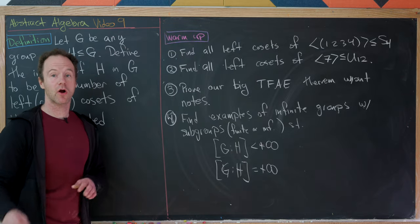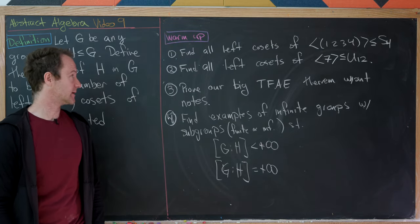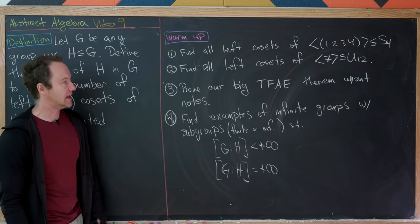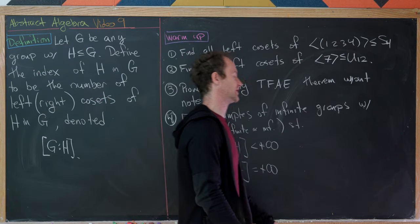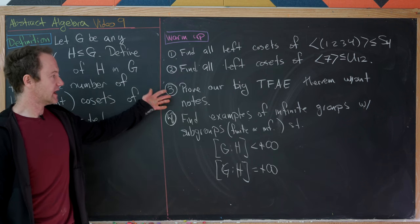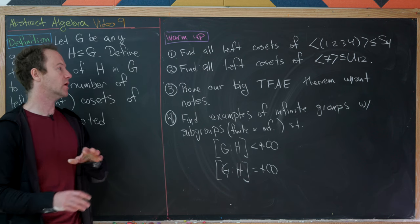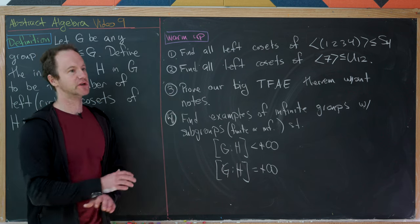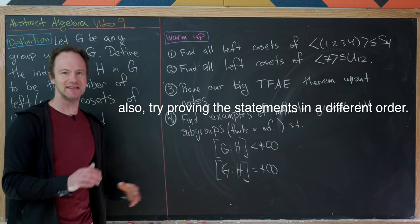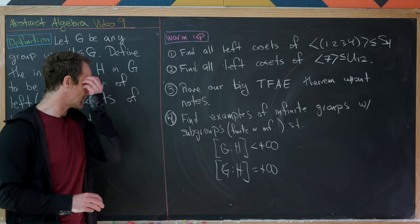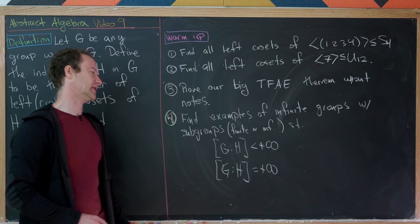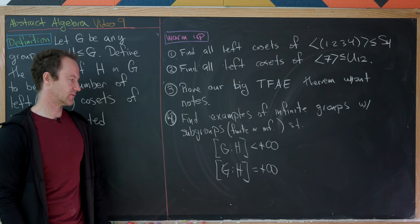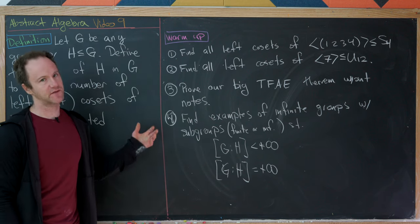Here are three warm-up exercises. First, find all left cosets of the cyclic subgroup generated by (1 2 3 4) inside S₄. Second, find all left cosets of the cyclic subgroup generated by 7 inside U(12). Third, prove the five-statement equivalence theorem from this video without notes — try this several times until you can do it completely without notes, as it really helps understand coset arguments. Finally, find examples of infinite groups with subgroups having both a finite index and an infinite index, different from the examples seen today.